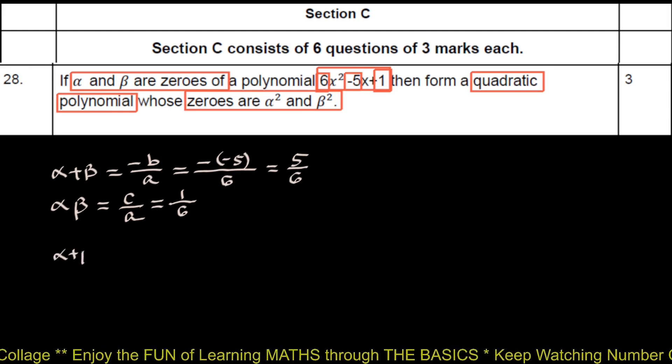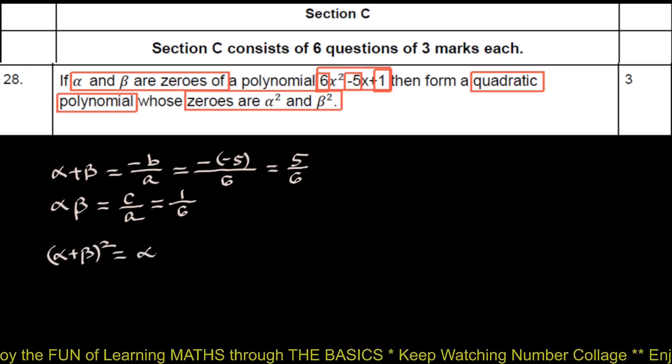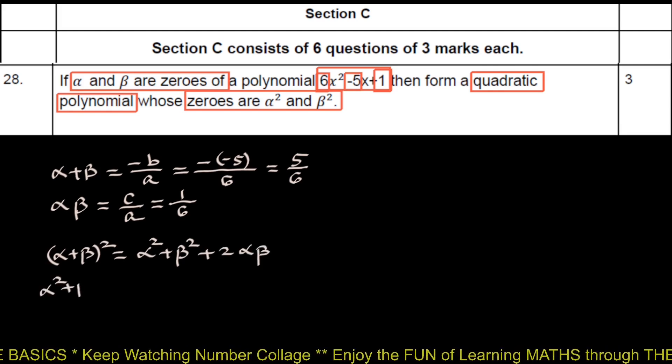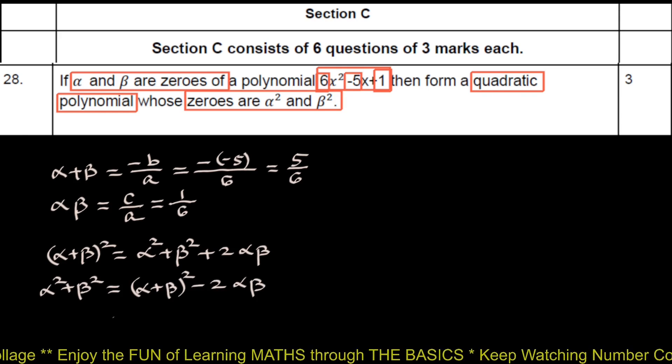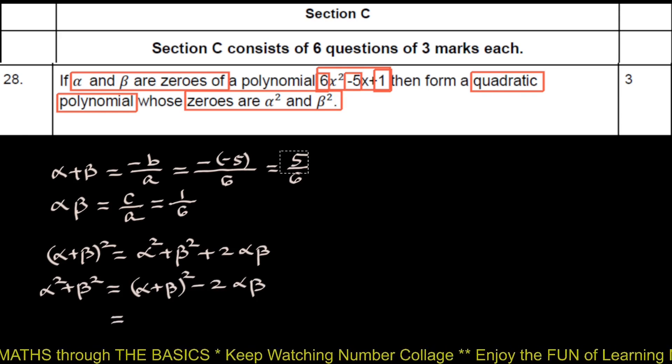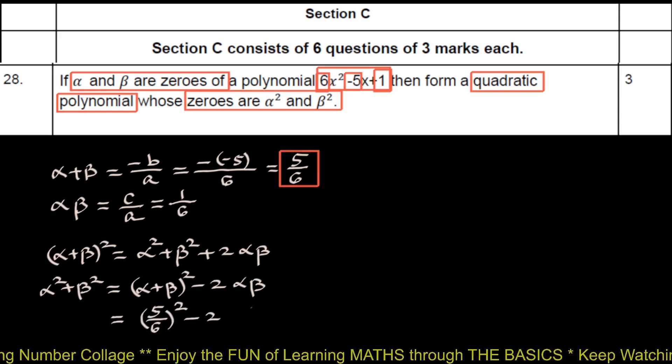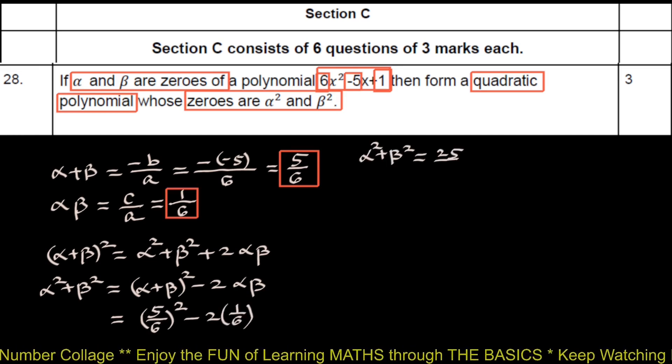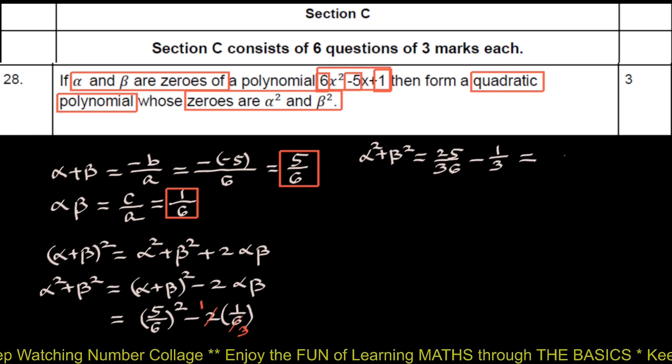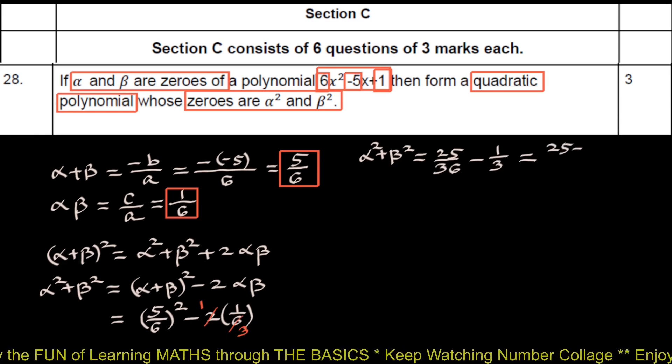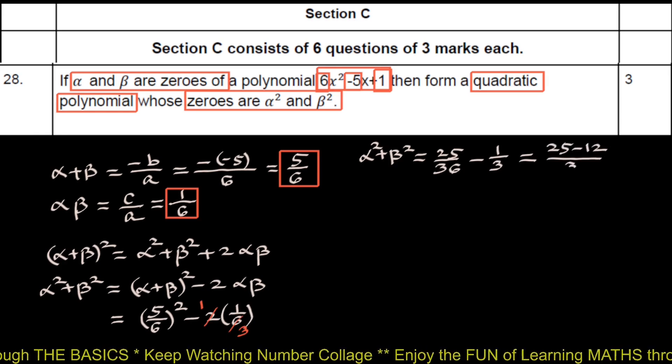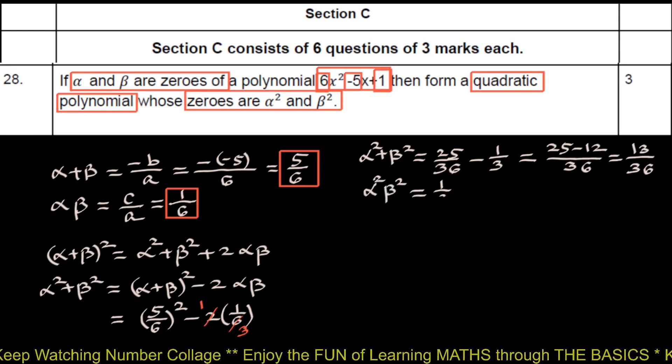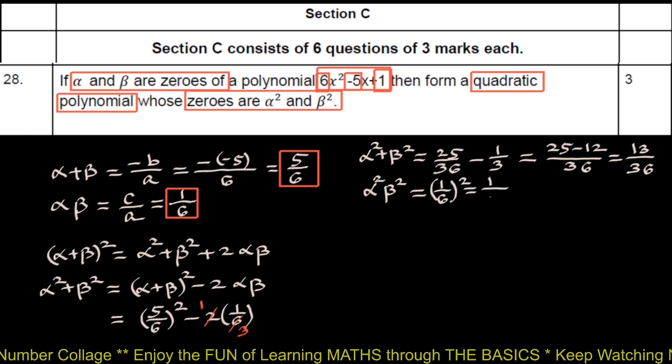Now, alpha plus beta whole square is alpha square plus beta square plus 2 alpha beta. Therefore, alpha square plus beta square is putting the values this 5 upon 6 whole square minus 2 into this 1 upon 6. 25 upon 36 minus 1 upon 3, which is 25 minus 12 upon 36, 13 upon 36. And alpha square beta square will be 1 upon 6 square, 1 upon 36.